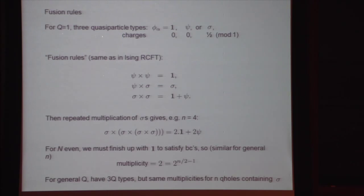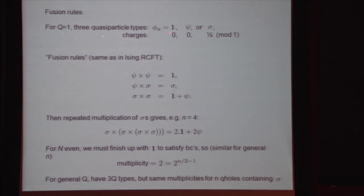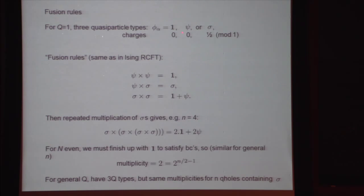Let me show how to get the multiplicity of states using the fusion rules. For this particular case, taking Q equals 1 to make it simple, there are three quasiparticle types — I'll use the symbols 1, Psi, and Sigma. These are really Psi and Sigma with some e to the i phi type factor multiplied in. The charges of these are respectively 0, 0, and 1/2 modulo 1.